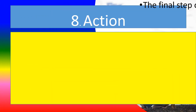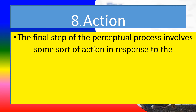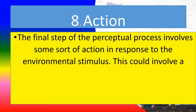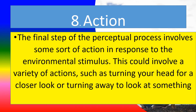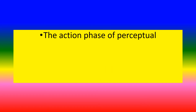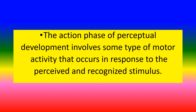Eight, action. The final step of the perceptual process involves some sort of action in response to the environmental stimulus. This could involve a variety of actions such as turning your head for a closer look or turning away to look at something else. The action phase of perceptual development involves some type of motor activity that occurs in response to the perceived and recognized stimulus.